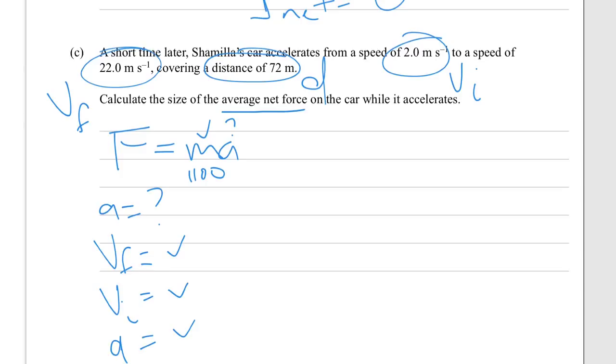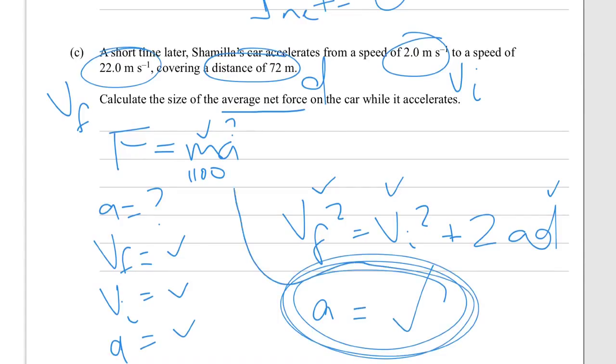We can use a kinematic equation. What have we got? VF squared equals VI squared plus 2AD. So we can rearrange that for A. Plug the values in for VF, VI, and D. And we'll get our value of A. And then once we've got our value for A, we can throw it into the equation up there, and then we've got our value for F.